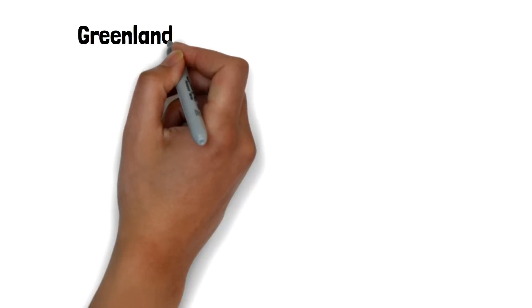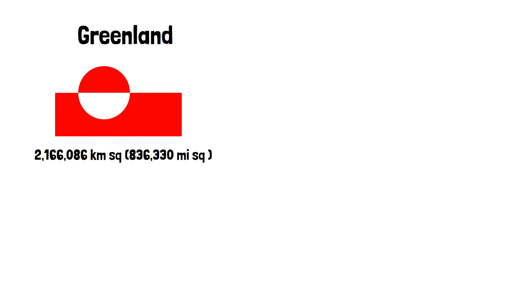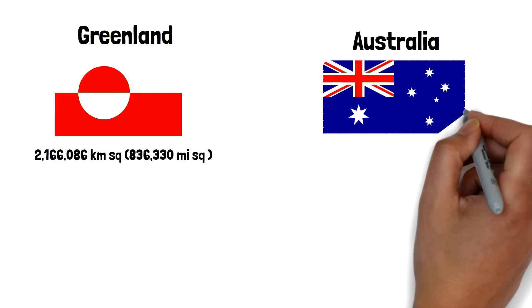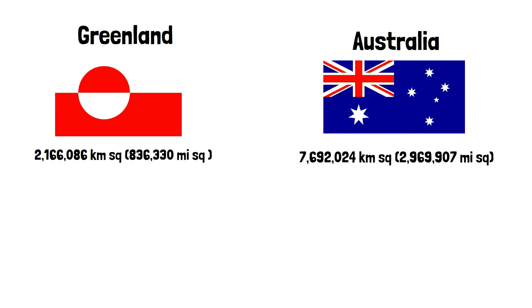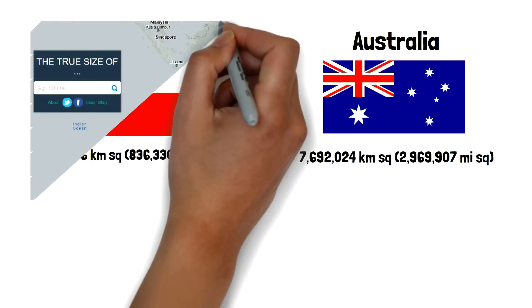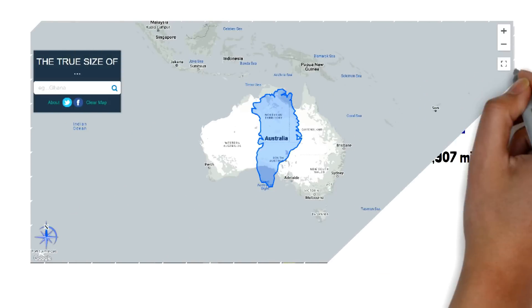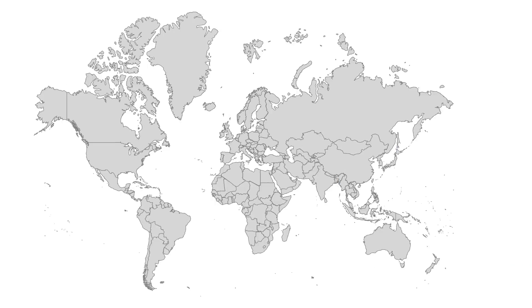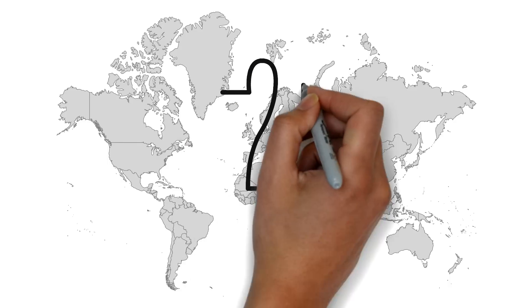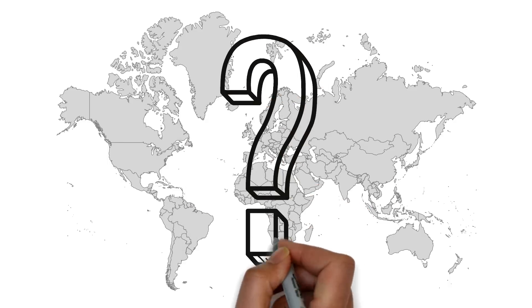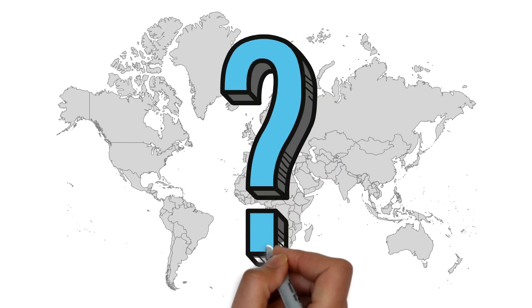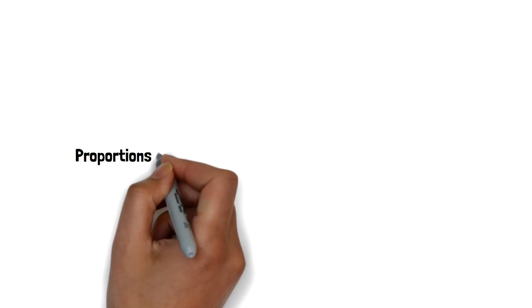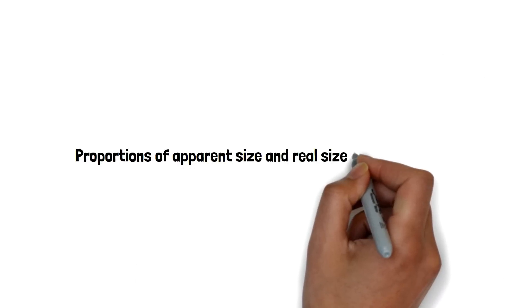In reality, Greenland is only about 2.1 million square kilometers while Australia is 7.6 million square kilometers, which is much bigger than Greenland. The actual size comparison of Greenland versus Australia looks something like this. So why does Greenland look so huge on the world map? In this video we'll take a look at the world map and see how distorted it is and experiment with the actual size of countries.